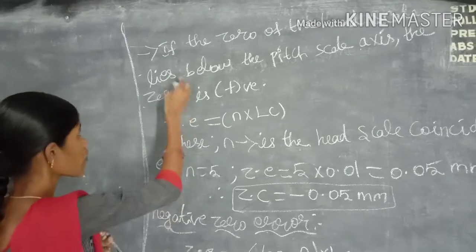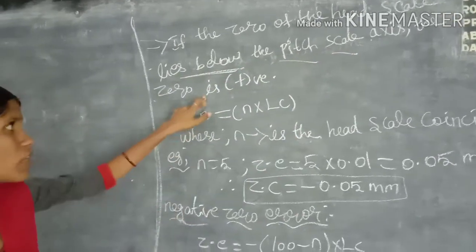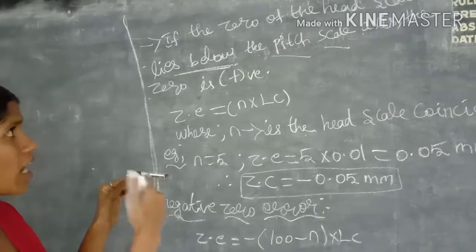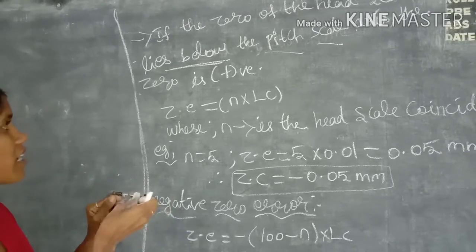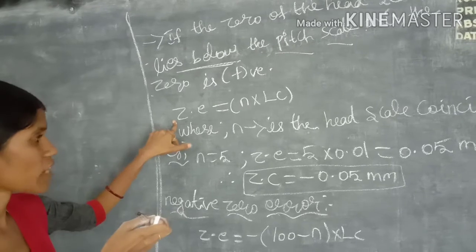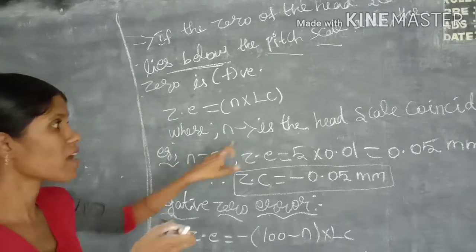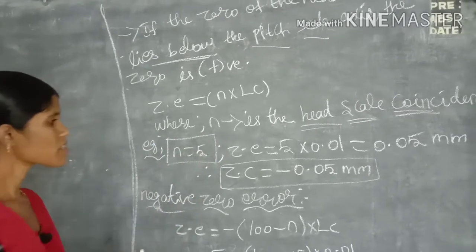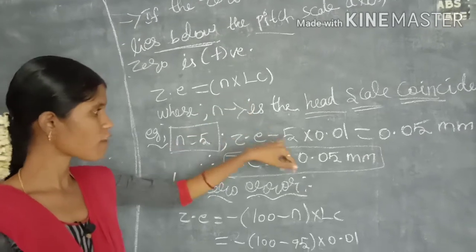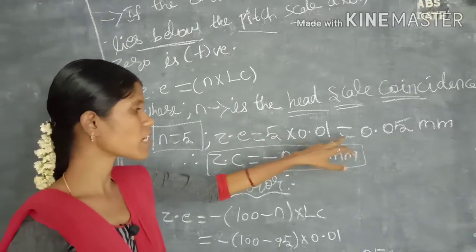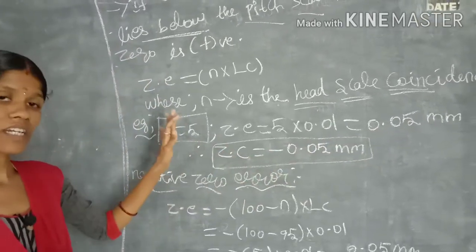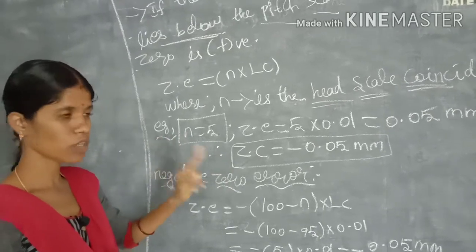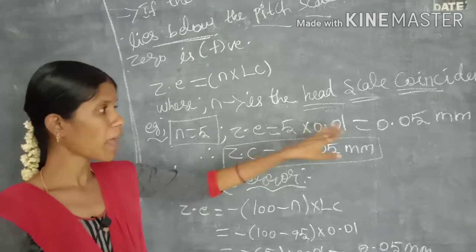Positive zero error: if the zero of the head scale lies below the pitch scale axis, the zero error is positive. The formula is: zero error = n × least count, where n is the head scale coincidence. For example, if n = 5, then zero error = 5 × 0.01 = +0.05 mm. Since the error is positive, the zero correction is −0.05 mm.